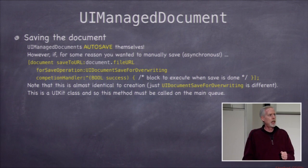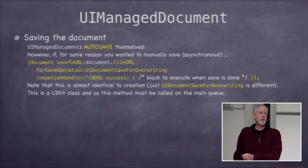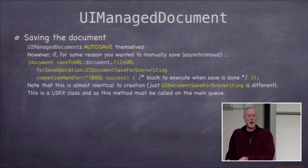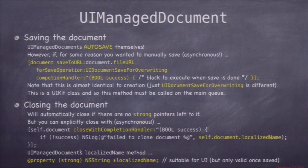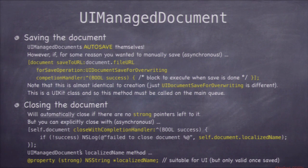A couple more things about UIManagedDocument. One is that it is auto-saved — you do not have to save it. You can save it manually with saveToURL using UIDocumentSaveForOverwriting, but generally we let it auto-save. It also auto-closes when there are no more strong pointers to it. Close and save are asynchronous, and you implement completion handlers for when they're done. Importantly, it auto-saves before closing.